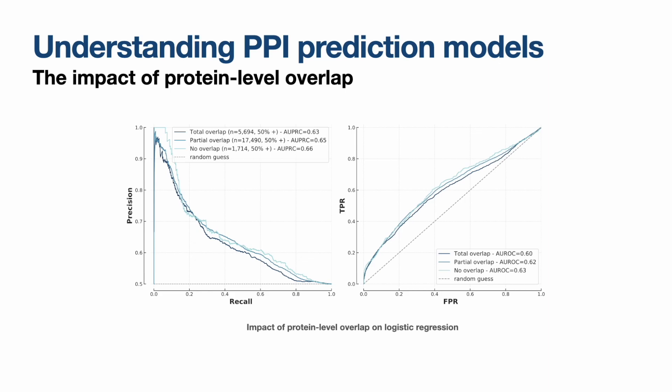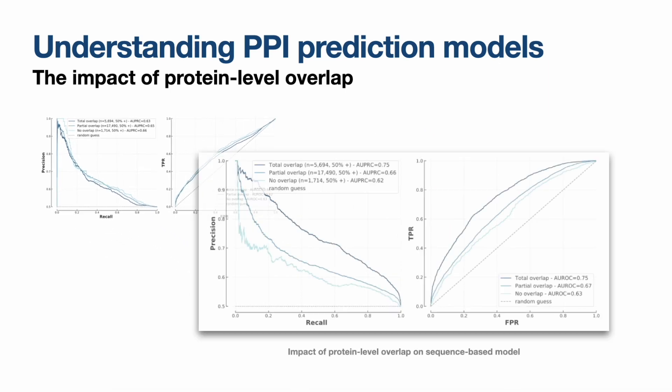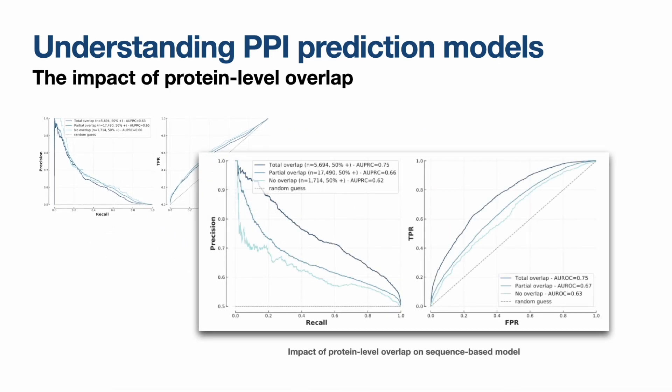Looking at the logistic regression — the functional genomics-based model — protein-level overlap doesn't affect it at all; it performs exactly the same across subgroups. It may seem like a lot of effort for not much, but looking at sequence models, we see there is actually a big effect: sequence models don't perform so well on new proteins, which has a lot of implications.